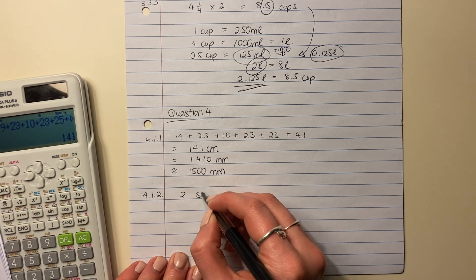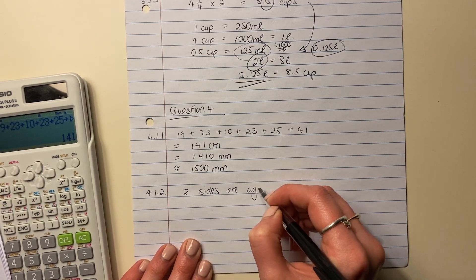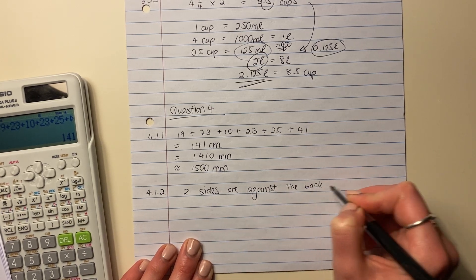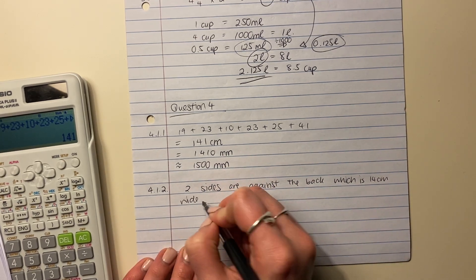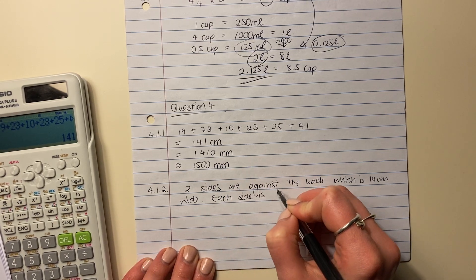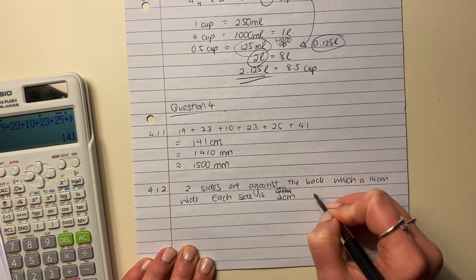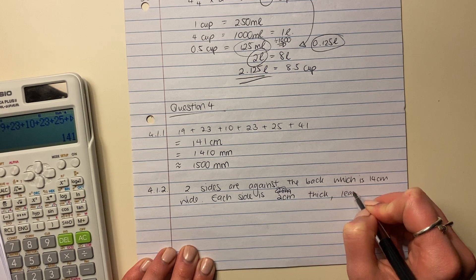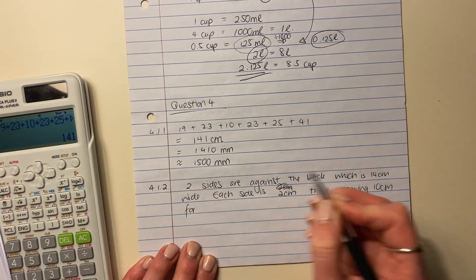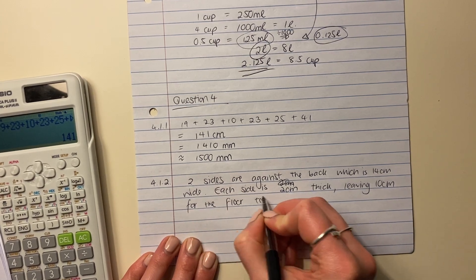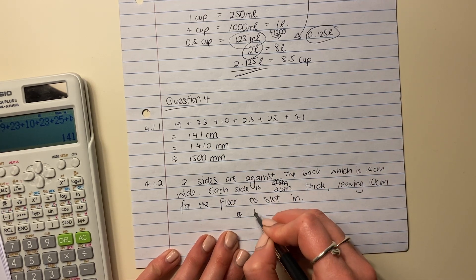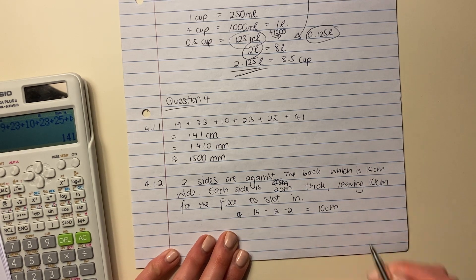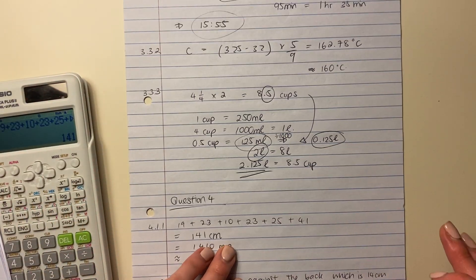So what are we going to say? So the two sides are against the back, which is 14 centimeters, 14 centimeters wide. Each side is 2 centimeters thick, leaving 10 centimeters for the floor to slot in. We haven't shown any calculations though, so we need to say 14 minus 2 minus 2 gives me 10 centimeters, and that is us done. I'm just going to turn this over so that we can do our last question for this video.